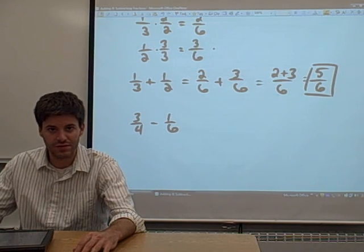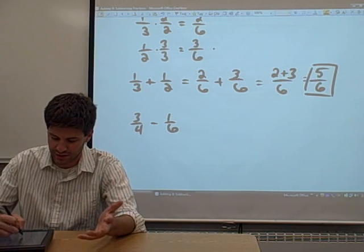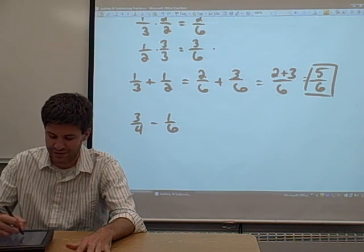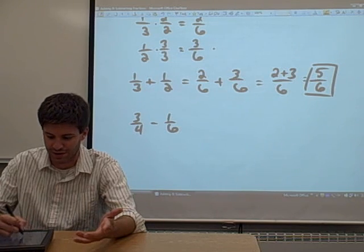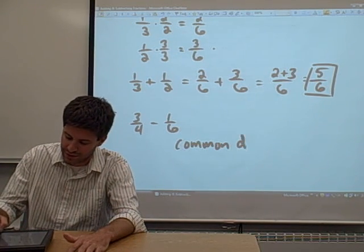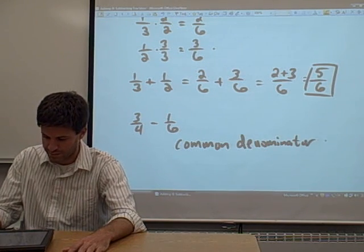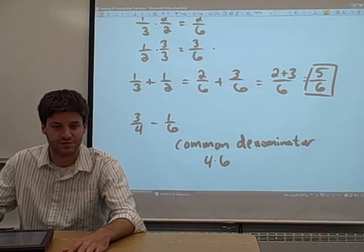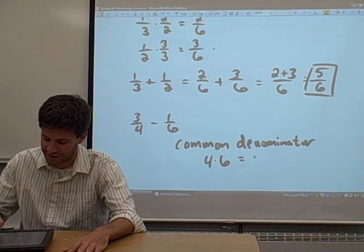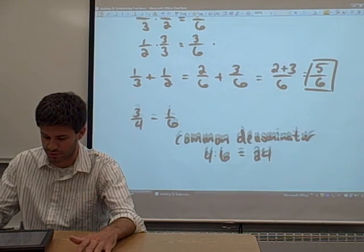The technique that I'm going to use is just sort of brute force, I guess you would call it. We're going to multiply the two denominators together to find a common denominator. 4 times 6 are the two denominators. Multiply them together to get 24. That'll work. That's a denominator that will actually work for this problem.